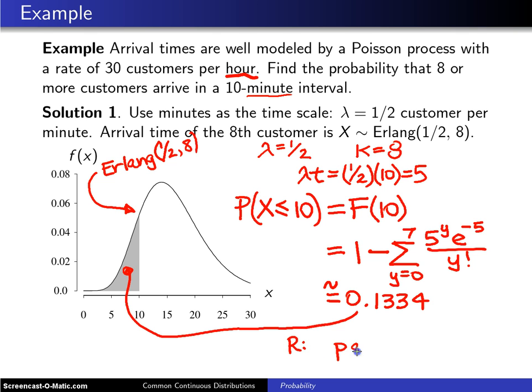If you want to calculate this in R, you can do it with the pgamma function. The arguments to the pgamma function will be first of all 10, which is what you want the probability of being less than, then you'll have parameter 8 and parameter one-half. Notice that the one-half and the eight—the order of the two parameters—is switched here in R.